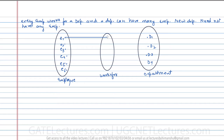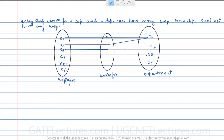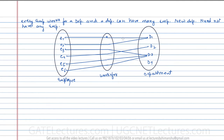Assuming that employee e1 works for department d1, employee e2 works for department d1, employee e3 works for department d3, employee e5 works for department d3, and employee e6 works for department d3. So every employee is assigned to a department. Department d1 and d3 have more than one employee, and department d4 does not have any employee.